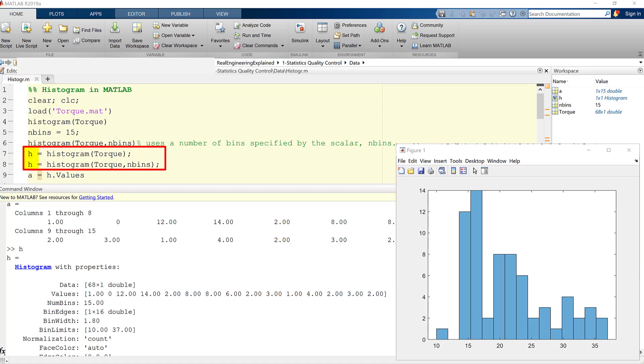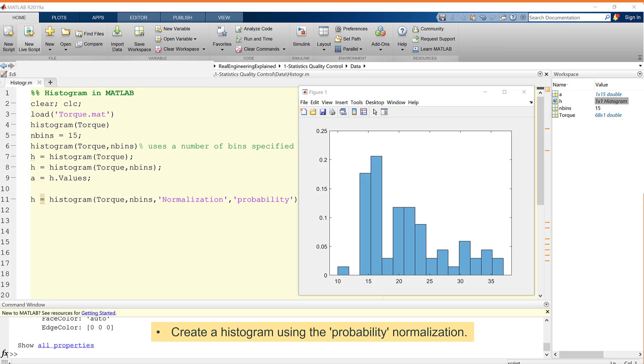If you type H, you can get all properties. We can get the number of counts or frequencies in each bin by command H.Values. This says the third bin includes 12 observations and the fourth bin includes 14 observations. We can also create the histogram using the probability normalization, like this.